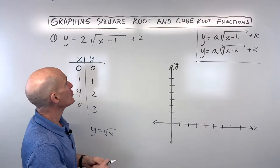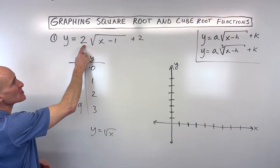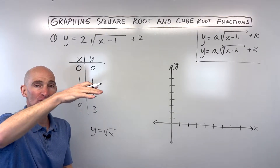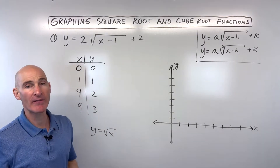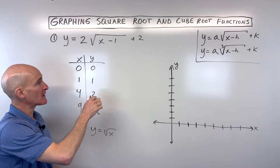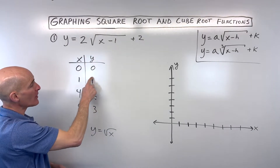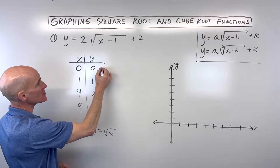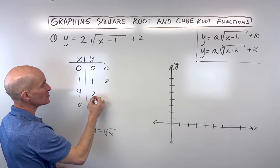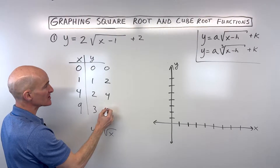Looking at our basic values, the 2 in front is going to be a vertical stretch by a factor of 2. When you stretch it vertically, that affects the y-coordinates. So we're going to multiply all these y-values by 2: 0 times 2 is 0, 1 times 2 is 2, 2 times 2 is 4, 3 times 2 is 6.